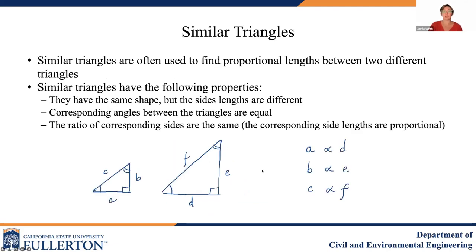We use similar triangles a lot in engineering to estimate the length of an unknown side. They're used very often because as long as they have the same shape and the same internal corresponding angles, you can use similar triangles to find a proportional length that you don't know. Similar triangles have the same shape but different side lengths. The important thing is that their corresponding angles have to be equal — for example, the angle between A and C has to equal the angle between D and F, and the angle between C and B has to equal the angle between E and F. If the corresponding angles are the same, then the side lengths are proportional, and the ratio of corresponding side lengths — A over D, B over E, C over F — will be the same, making it easy to compute an unknown length.